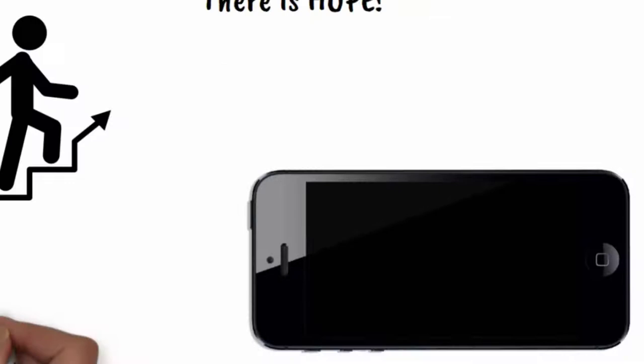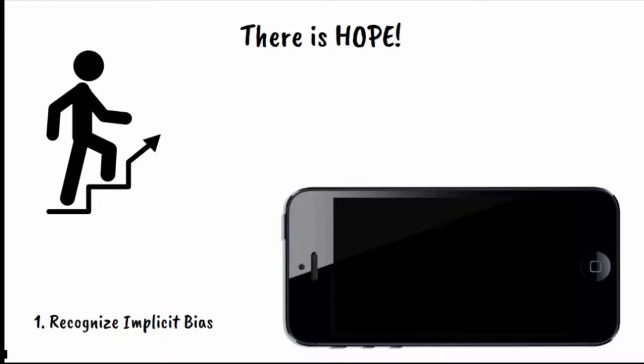The first step in battling implicit bias is recognizing that it exists and you also have implicit biases. Only then can we take steps to identify what they may be and how we can help ensure that these do not unfairly influence important decisions.